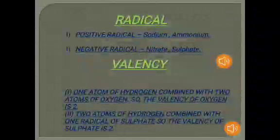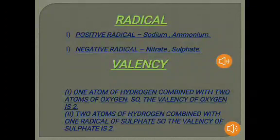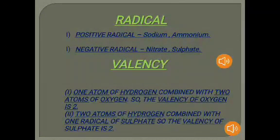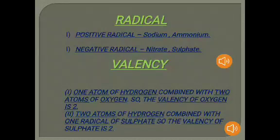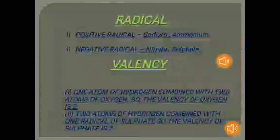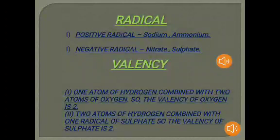The positive part is called the basic radical and the negative part is called the acid radical. For example, in sodium chloride, the positive part is sodium (Na+) and the negative part is chlorine (Cl−). So Na+ is the basic radical and Cl− is the acid radical.